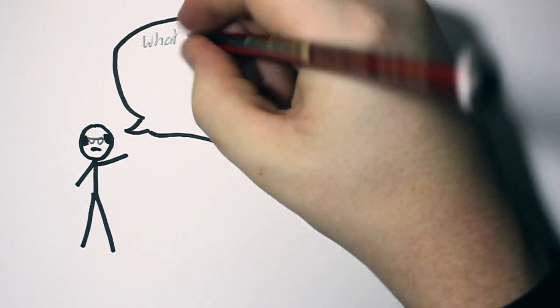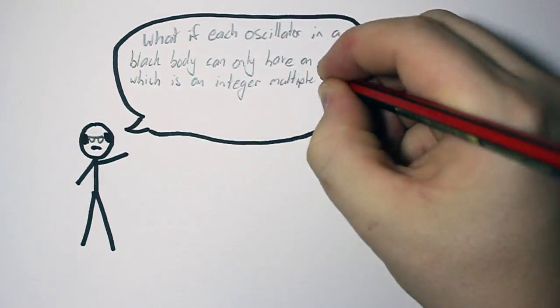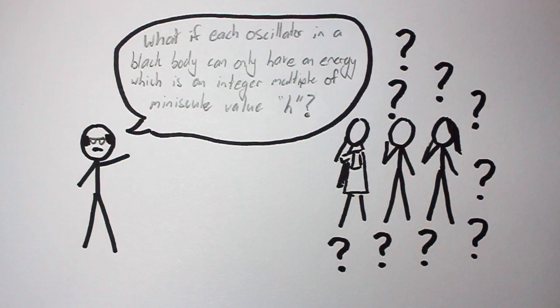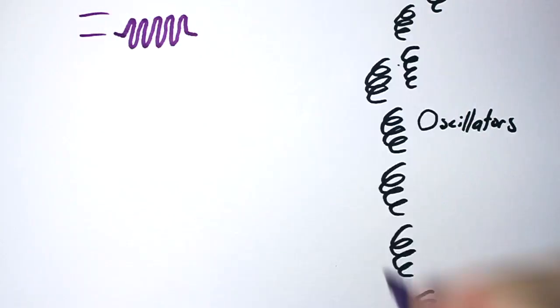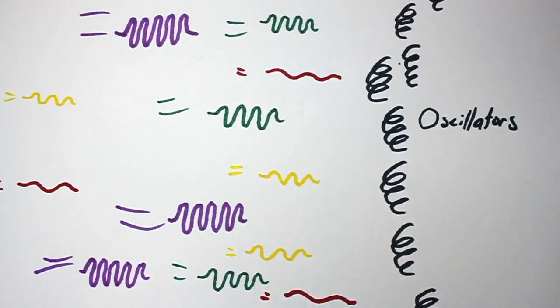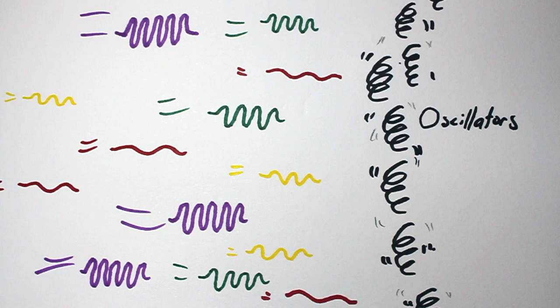What if each oscillator in a black body can only have an energy which is an integer multiple of minuscule value h? In other words, the energy permitted to and exiting the oscillator was quantized. Energy was not a continuously variable wave like Lord Rayleigh had assumed.